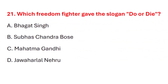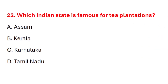Question 21. Which freedom fighter gave the slogan 'Do or Die'? Correct answer is option C: Mahatma Gandhi. Question 22. Which Indian state is famous for tea plantations? Correct answer is option A: Assam.